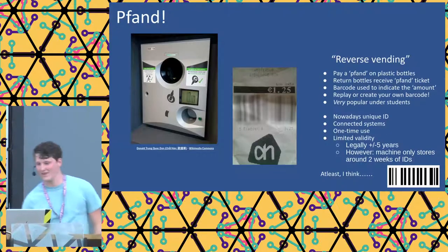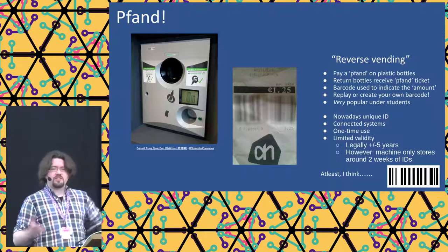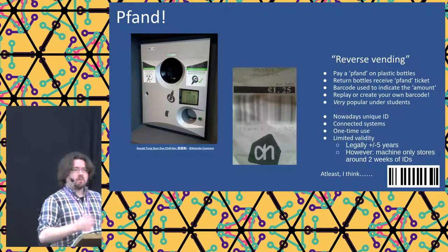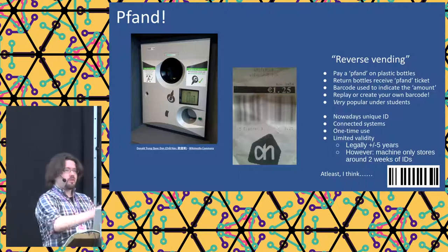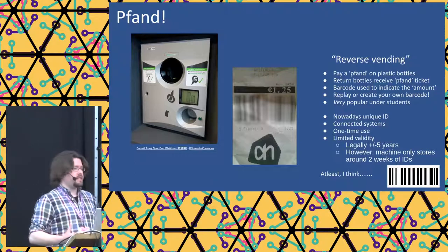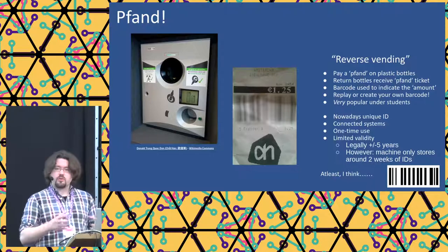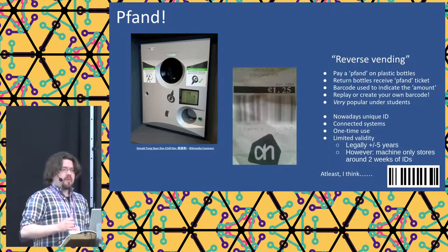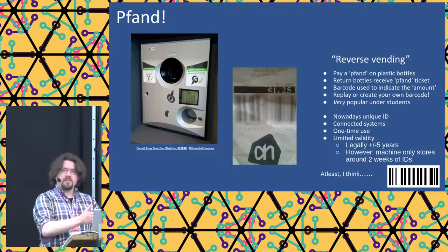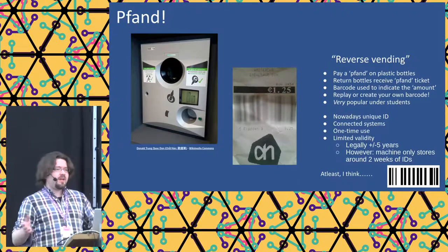One interesting attack relates to what in Dutch is called statiegeld, or as the Germans know it, Pfand — the deposit on plastic bottles. You return the bottle to a reverse vending machine, it scans it, and gives you a small ticket for the deposit amount. However, in older systems, the ticket had a barcode that was simply a product code encoding the amount — something like 0.25 or 1.25. So you could just replicate, copy, or even create your own barcodes. This was really popular with students — about 10 to 15 years ago, many drink budgets were subsidized this way.